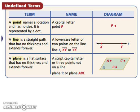Let's look at some vocabulary. Undefined terms. A point names a location and has no size. It is represented by a dot. Notice here we've got a dot and it's a capital letter. So a point is labeled with a capital letter.